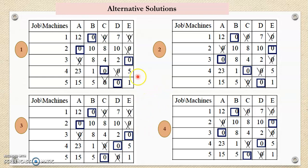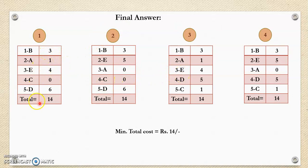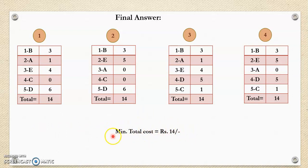The final answer lists all four assignments. To calculate the optimum value, take the cost values corresponding to the assigned cells from the original table. All the assignment combinations are noted and their total minimum costs are calculated. Although there are multiple solutions, the total cost is invariant — that is, constant. This is a special case of the assignment problem that arises in many day-to-day situations. In the next lecture, we will cover the unbalanced assignment problem.